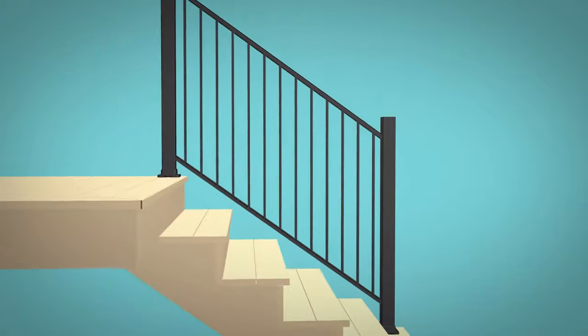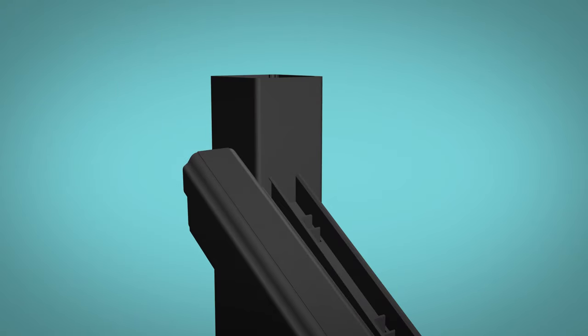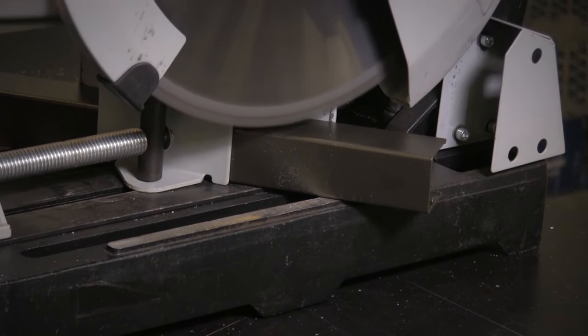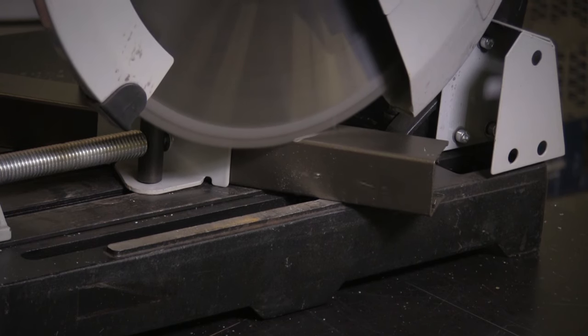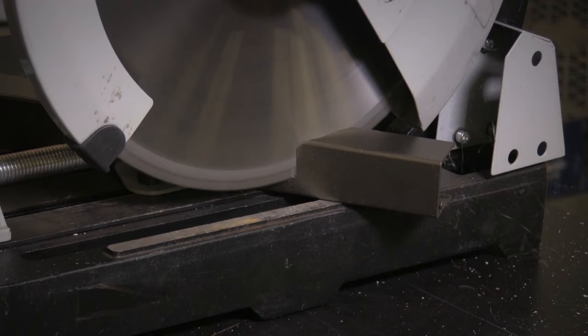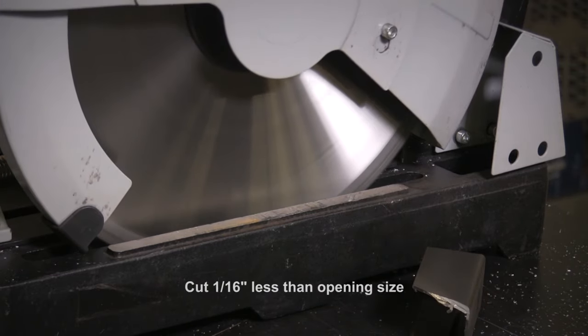Following the same angle as the secured stair panel, clamp or hold the top and bottom rail snaps against three inch posts. Using a sharp number two pencil, mark them at all four locations. Remove the clamps and cut the top and bottom rail snaps at all four locations taking care to match the appropriate stair angle. Use of miter saw with a sharp non-ferrous blade is recommended. Cut 1/16 inch less than opening size.